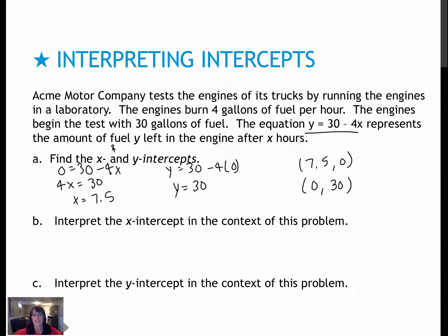Now, interpreting the intercepts has to do with all of this other stuff that I didn't even really read when I got here. So let's read it together. Acme Motor Company tests the engines of its trucks by running the engines in a lab. The engines burn 4 gallons of fuel per hour. The engines begin a test with 30 gallons of fuel.